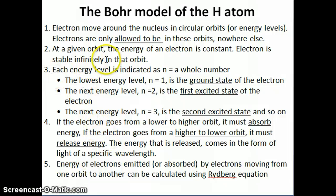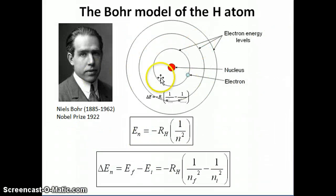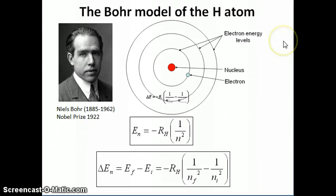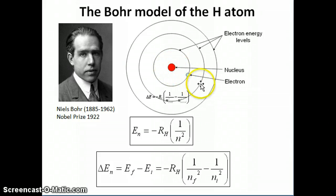Each orbit is assigned a number n. The lowest energy level, n=1, is the orbit closest to the nucleus and is called the ground state. Moving outward, n=2 is the first excited state, n=3 the second excited state, and so on. As you go further and further out, at n equals infinity the electron is completely removed from the atom — the hydrogen atom becomes the hydrogen ion H+, which we call ionization.